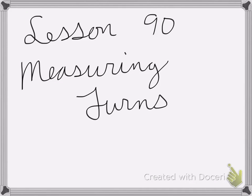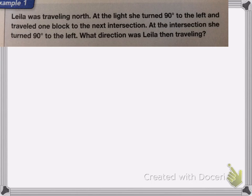All right, so lesson 90 is on measuring turns. So here we have Lila was traveling north. At the light, she turned 90 degrees to the left and traveled one block to the next intersection. At the intersection, she turned 90 degrees to the left. What direction was Lila then traveling?